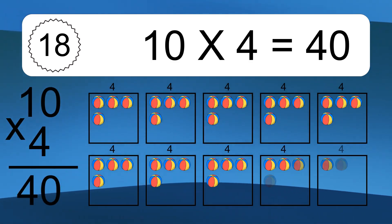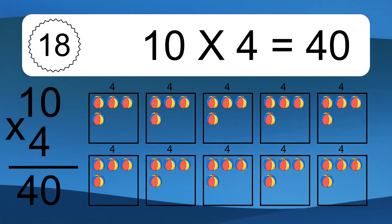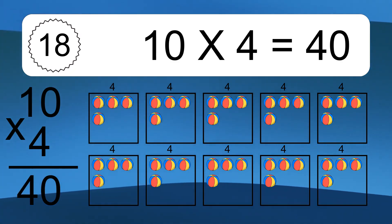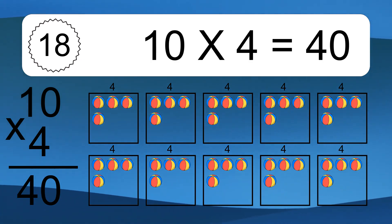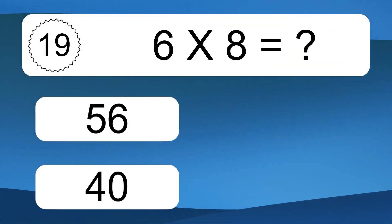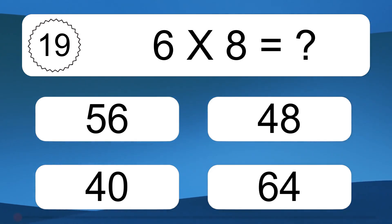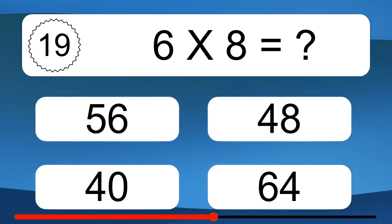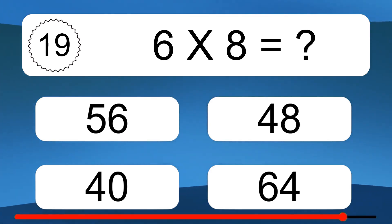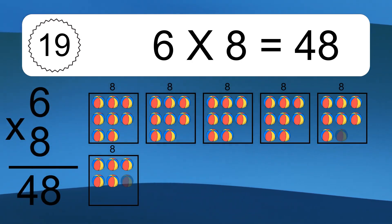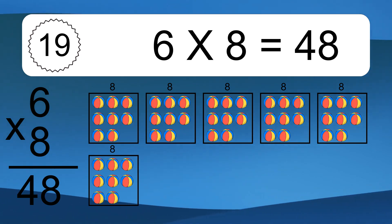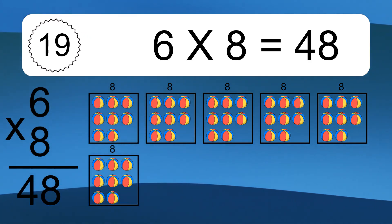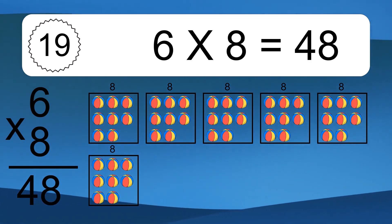10 times 4 equals what? 10 times 4 equals 40. We have 10 boxes, and each box has 4 colorful balls inside. If you count all the balls in all the boxes together, you will have 10 times 4 balls. This equals 40 balls. 6 times 8 equals what? 6 times 8 equals 48. We have 6 boxes, and each box has 8 colorful balls inside. If you count all the balls in all the boxes together, you will have 6 times 8 balls. This equals 48 balls.